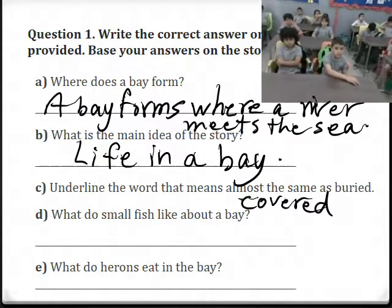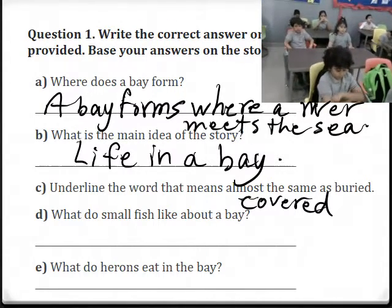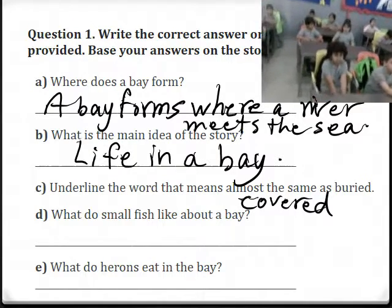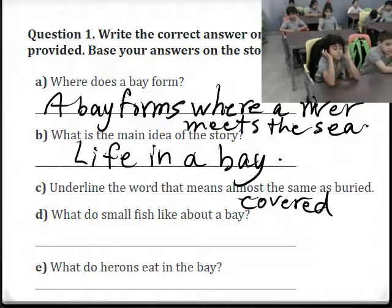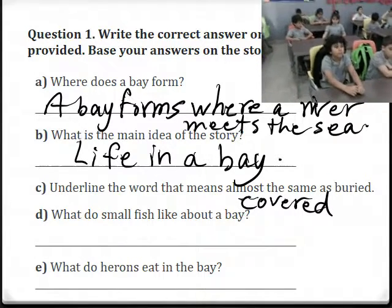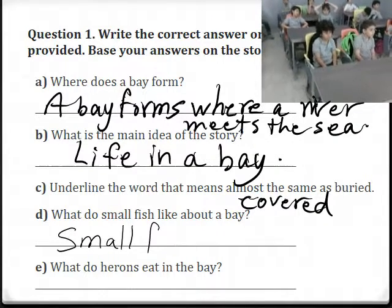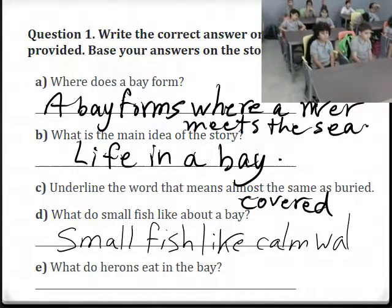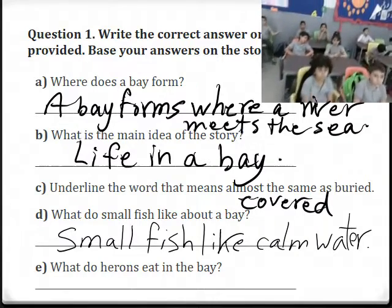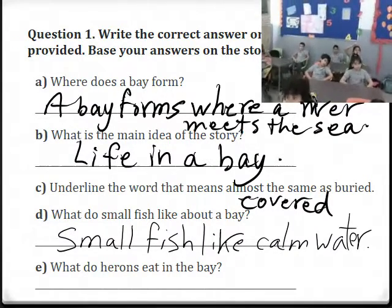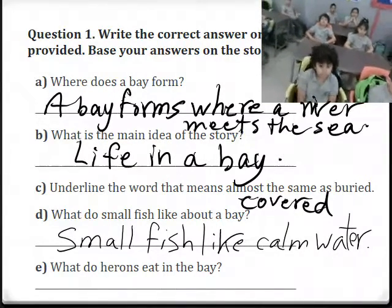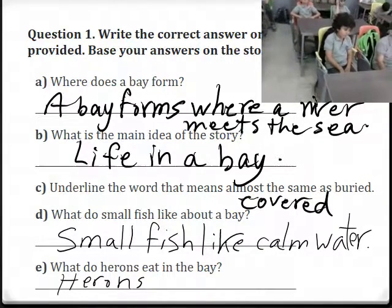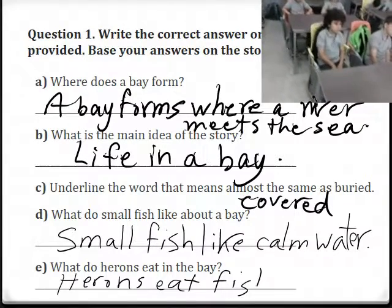What do small fish like about a bay? Calm water — very good. Small fish like calm water. What do herons eat in the bay? They eat fish. Very good. Herons eat fish.